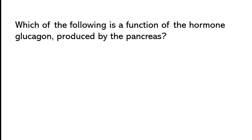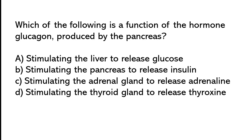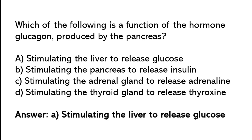Which of the following is the function of the hormone glucagon produced by the pancreas? Stimulating the liver to release glucose, stimulating the pancreas to release insulin, stimulating the adrenal gland to release adrenaline, or stimulating the thyroid gland to release thyroxine. The correct answer is option A — stimulating the liver to release glucose.